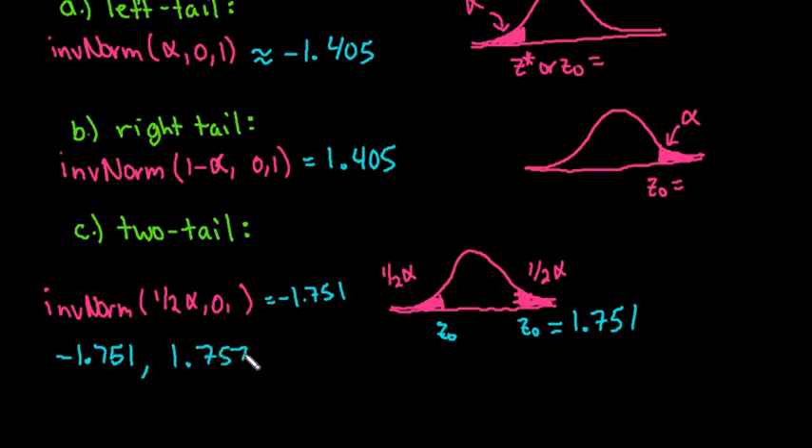That only gives me the negative value. But remember that the positive value is the same. It's just the opposite side. So the two tail test has two critical values. Your value could be either below negative 1.751 or it can be above positive 1.751.